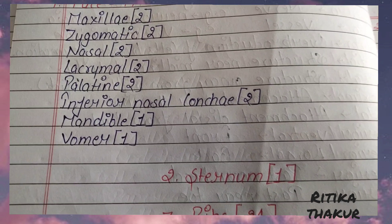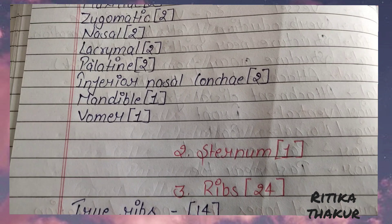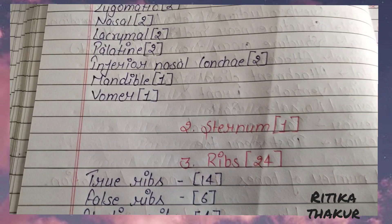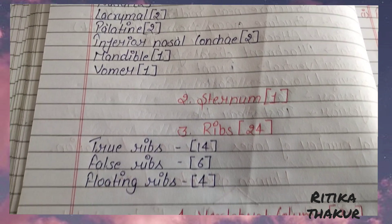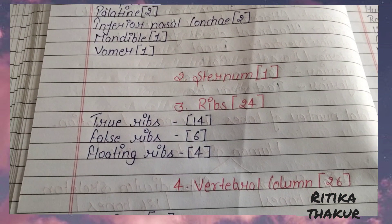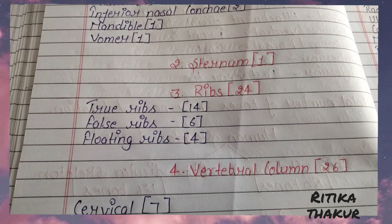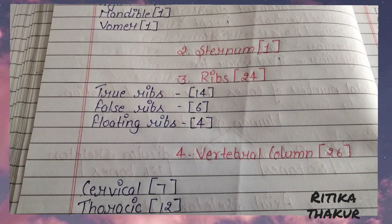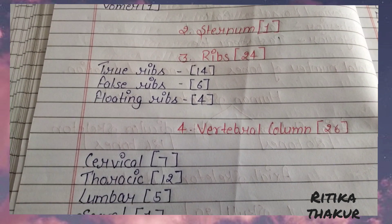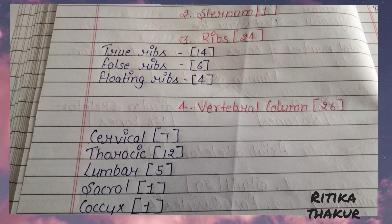Inferior nasal concha 2, Mandible 1, Vomer 1. Sternum. False ribs 24: True ribs 14, False ribs 6, Floating ribs 4. Vertebral column 26: Cervical 7. Sacral 1, Coccyx 1.